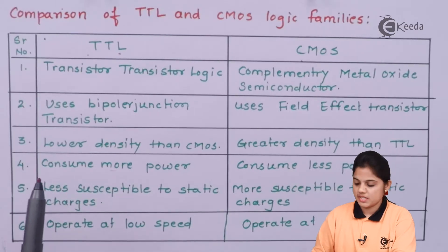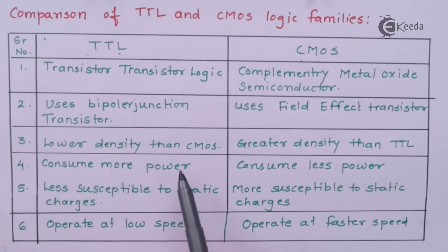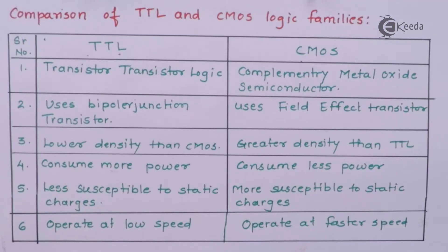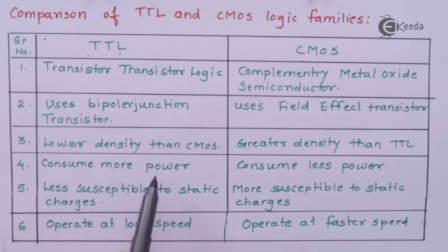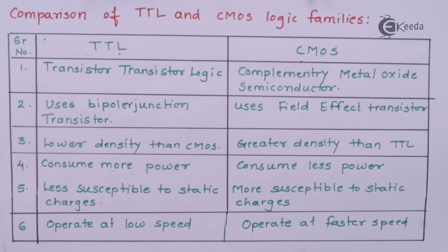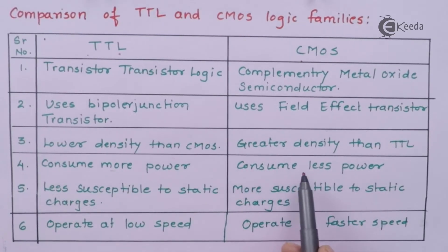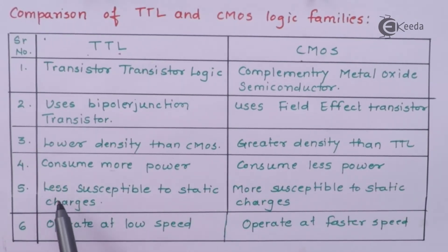TTL consumes more power, while CMOS consumes less power. BJT is more susceptible to noise compared to FET — when you compare BJT and FET, noise gets added more in BJT. Since TTL uses BJT, it is noisier and consumes more power because more passive components such as resistors and capacitors are needed to design the circuit, which consumes more power. MOSFET consumes less power than BJT.